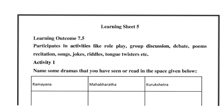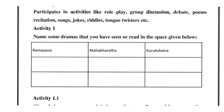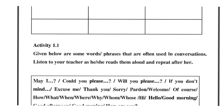Activity 1 is given: name some dramas that you have seen or read in the space given below. There is one box where you write the dramas you have seen or read. If you have seen dramas like Ramayana, Mahabharata, Kurukshetra, or Ekalavya, write them for activity 1.